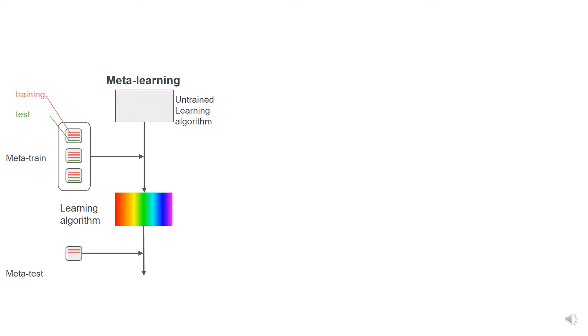At meta-test time, we see a small training set for a new task, and use the learning algorithm to learn a function from very few data, which we then evaluate on the test set.